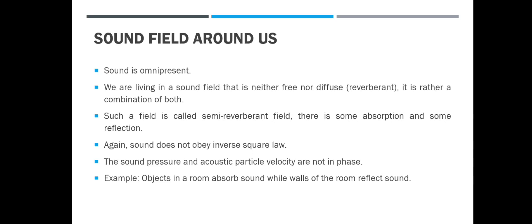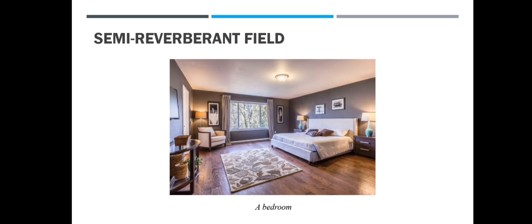You might be wondering what the sound field around us is. We're living in a sound field that is neither free field nor diffuse field — we have reflections, but not enough to categorize it as a diffuse field. This field is called a semi-reverberant field, a combination of both. In a typical bedroom, you have hard reflecting surfaces like walls, tables, and ceilings, as well as absorbing surfaces like couches, curtains, and carpets. Sound doesn't obey the inverse square law, and the particle velocity and pressure are not in phase.